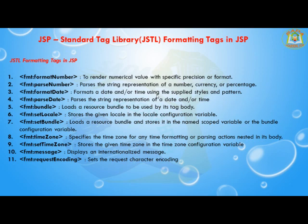If you put a custom name for the prefix, you need to declare it in the tag library directive. The first tag is fmt:formatNumber, which renders a numerical value with a specified precision or format. If you want to change a number to decimal or double, you can use the formatNumber tag. The next tag is fmt:parseNumber, used to parse the string representation of a number, currency, or percentage.